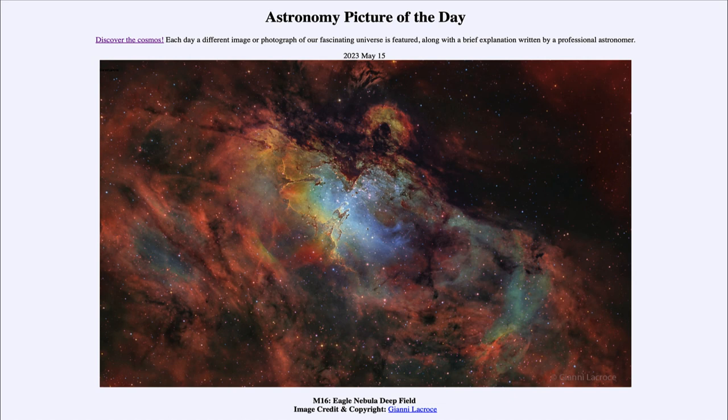You'll also notice tendrils of material pointing in towards those clusters of stars. Those are the denser knots of material and are regions where stars are still in the process of forming but have not yet broken out of their cocoons to become visible.